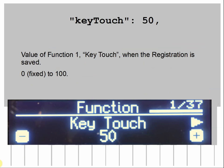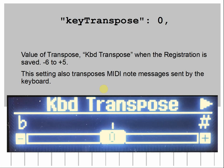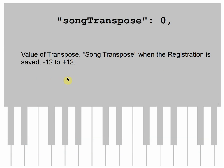Key touch is the value of function one when the registration is saved. Range is zero (not touch sensitive); otherwise low numbers mean more touch sensitive and high numbers mean less sensitive. Key transpose basically transposes the keyboard — really nice if you can't transpose on site, especially accompanying a vocalist. Value is minus six semitones to plus five; changing it also transposes the MIDI notes sent by the keyboard. Song transpose is similar but transposes MIDI songs you're playing back from the piano's memory or from a USB stick.